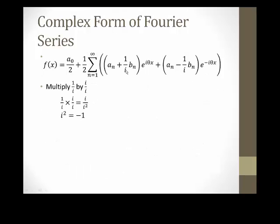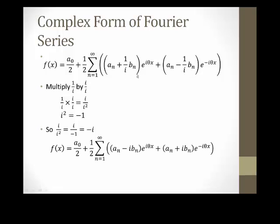Next, we can multiply our 1 over i that is in front of both of our b_n coefficients by i over i. We can do this because i over i is just 1. So when we multiply 1 over i times i over i, we will get i over i squared. We also know that i squared is equal to negative 1, so i over i squared equals i over negative 1, which turns it into negative i. So we can change both of our 1 over i in front of our b_n coefficients to just negative i, and we have switched the signs for each i in front of our b_n coefficients.